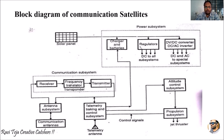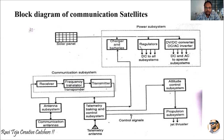Welcome to the course of microwave communication, television, and satellite communications. Today's topic is the block diagram of communication satellites — what a satellite consists of, what they are made of, and how satellites are divided into several segments, starting from the solar panel all the way to the thrusters.